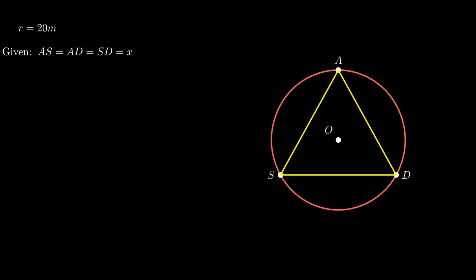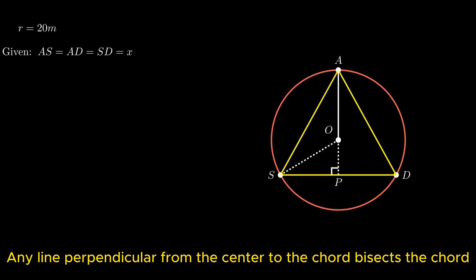To find one of the sides of the triangle ASD, construction of a right-angled triangle is done by drawing perpendicular from point A to the segment SD. Join point S to point O, resulting in the formation of right-angled triangle OPS. By using the theorem that any line perpendicular to the chord from the center bisects the chord, as a result, both segments SP and segment PD become half of X.